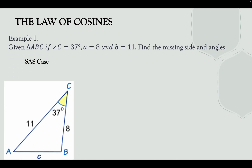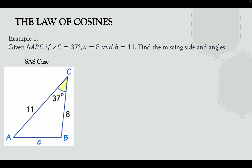Example number one: given triangle ABC with angle C = 37°, side a = 8, and side b = 11, find the missing side and angles. This is the SAS case. The first step is to find the side opposite to the given angle. The given angle is C = 37°, so the opposite side is side c. The formula is c² = a² + b² − 2ab·cos C.